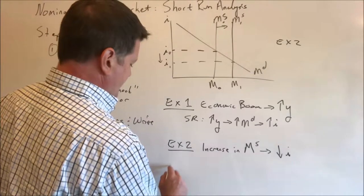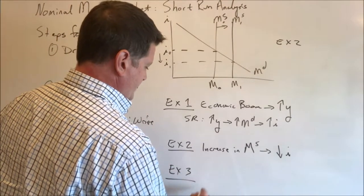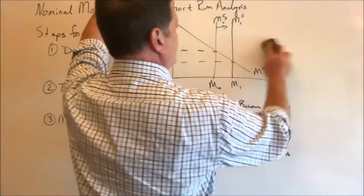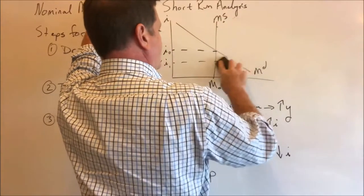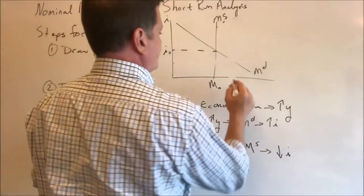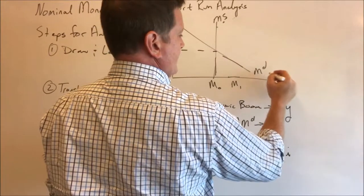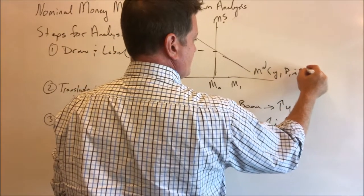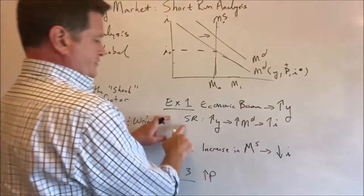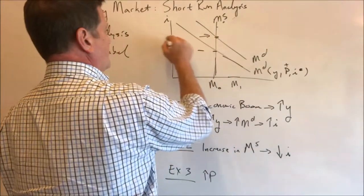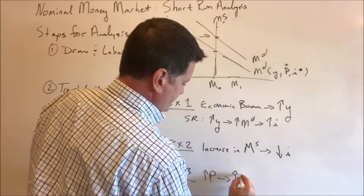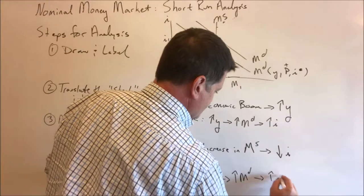Finally, we could do an example three of an increase in the price level. An increase in the price level brings us back to this diagram here. We know that money demand depends on the price level. So that will increase money demand. And the result will look just like example one. We'll push up interest rates. Increasing the price level increases money demand. Again, which pushes up interest rates.